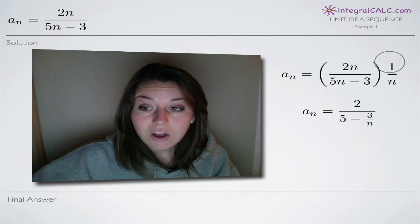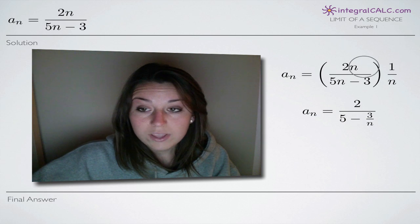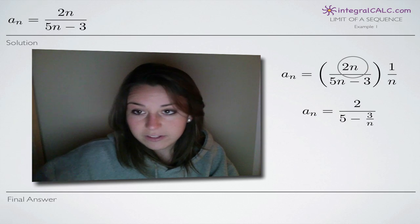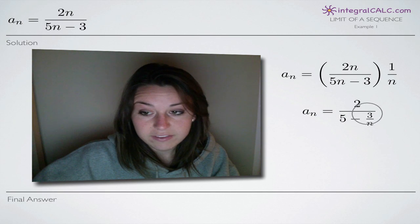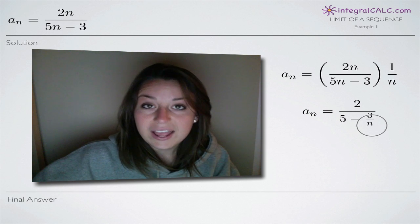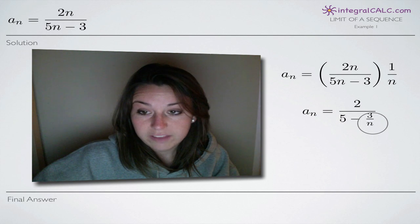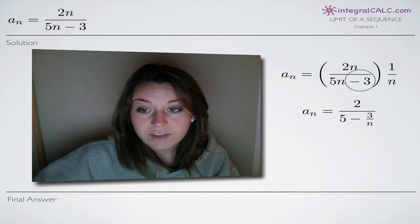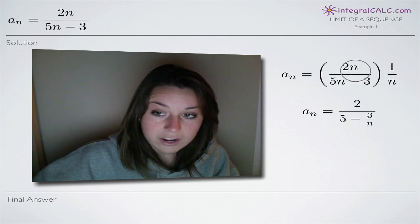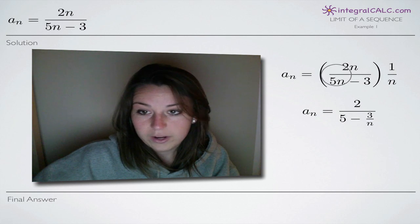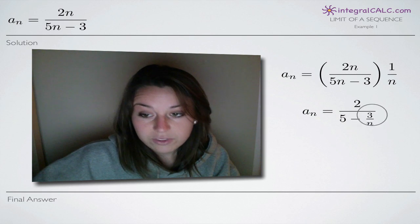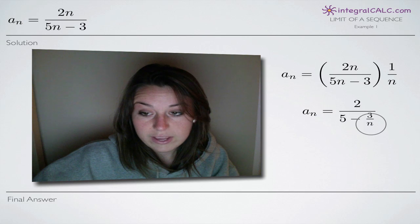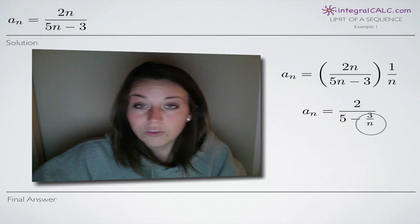By dividing all of the terms through by n, we eliminate n's in the numerators of each term and we end up with n just in the denominator of this singular term. Once we get n's only in the denominators — and again, we're talking about the denominator of 2n (which is 1), the denominator of 5n (which is 1), and now the denominator of this term 3 over n — we can proceed to take the limit.